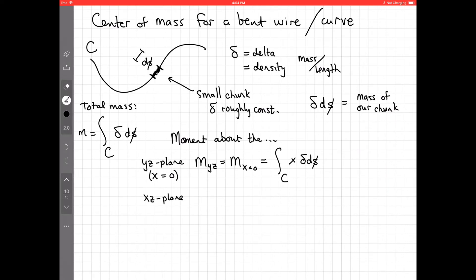And then we do the same thing for y and z. So, the moment about the xz plane, that's y equals zero. That would be m sub xz, m sub y equals zero. This would be the integral of y delta ds. And then the xy plane, this would be z equals zero, would be m sub xy, m sub z equals zero. In other words, the integral along c of z delta ds. And those are giving you weighted sums of x, y, and z coordinates, respectively.